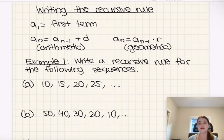If we're using the arithmetic formula, we need to find the common difference. And if we're using the geometric formula, we need to find the common ratio. We also need to identify the first term, though that's pretty quick. Okay.